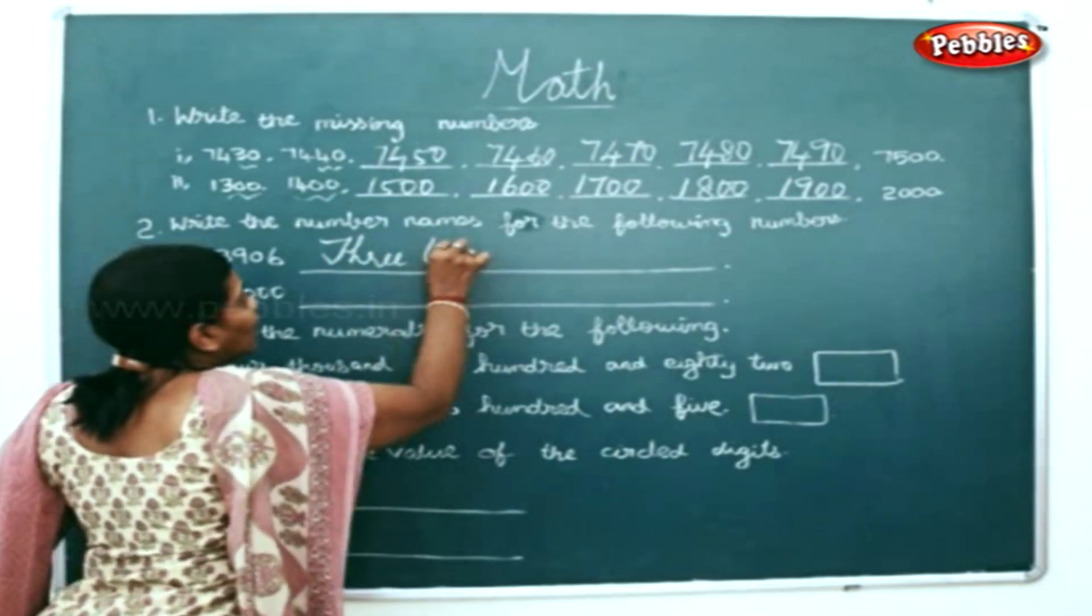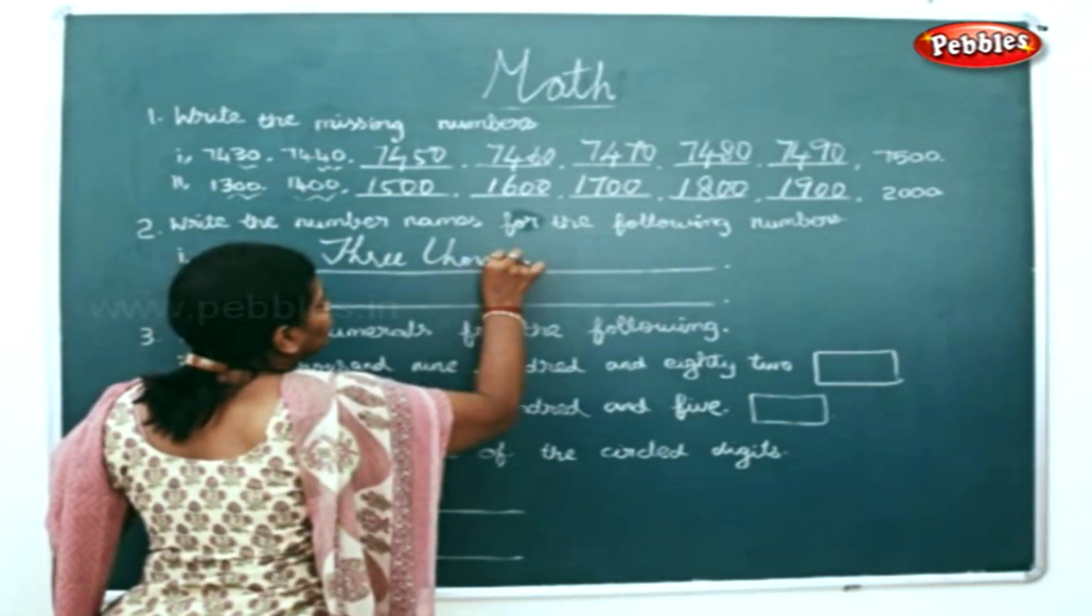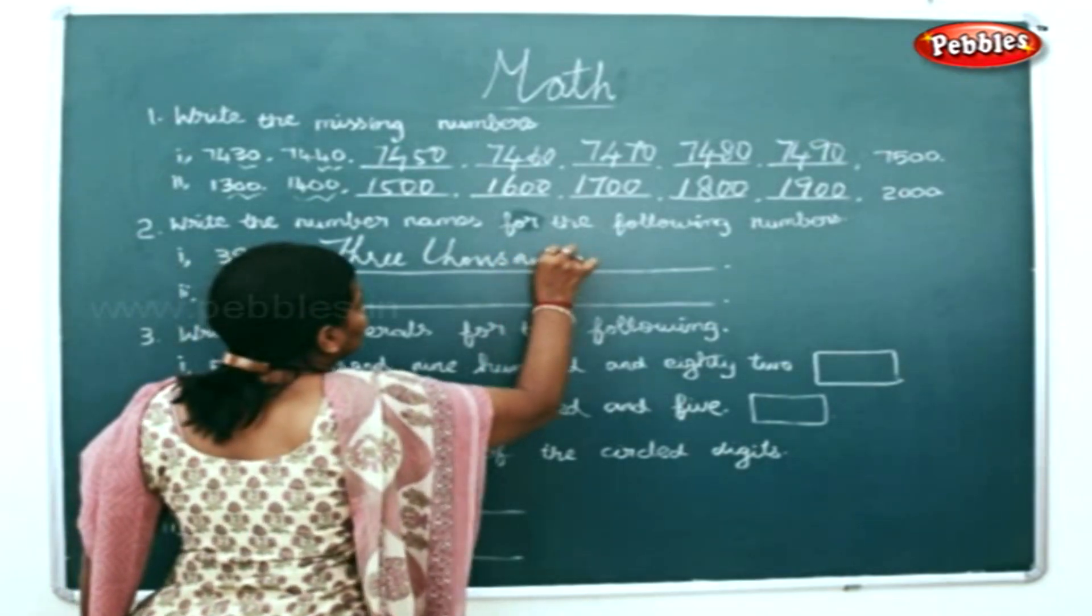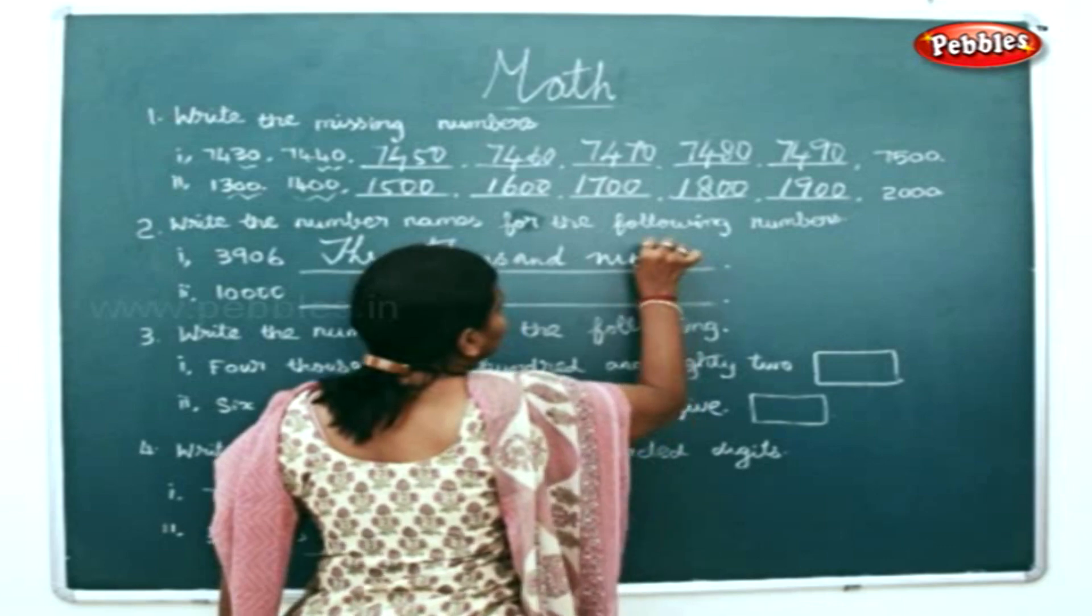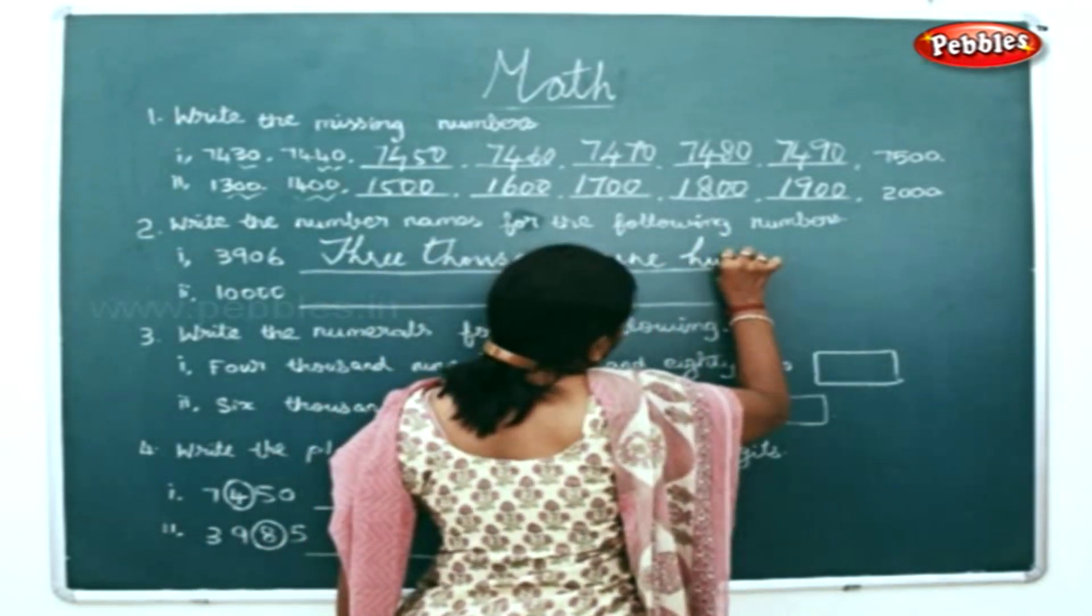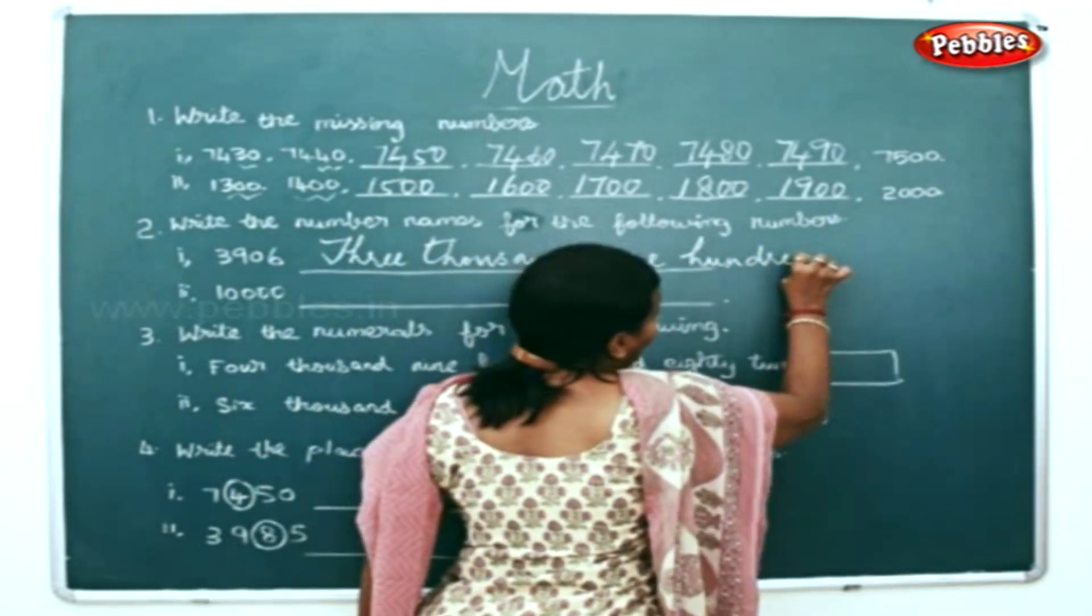This can be written as three thousand nine hundred and six.